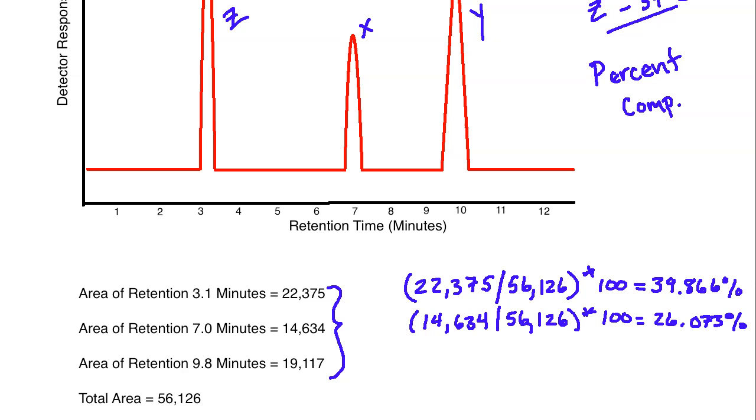You have 14,634 divided by 56,126 times 100, and that one is going to equal 26.073. And then finally, for the last one, we have 19,117 divided by 56,126. You multiply this by 100, and you're going to end up with 34.061.